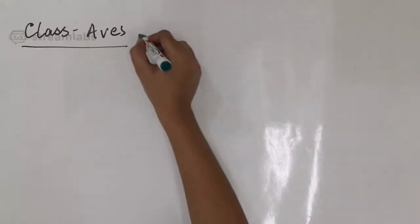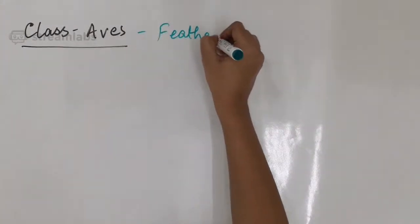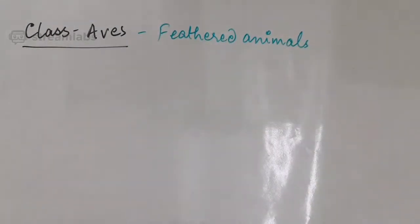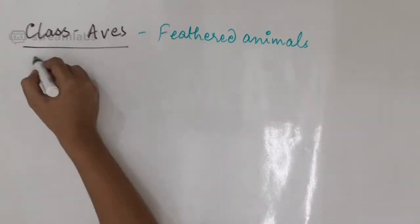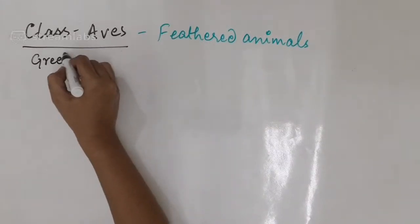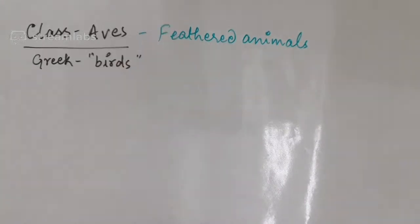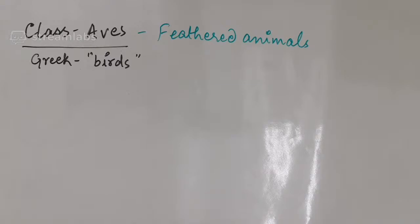This class of the vertebrates is called the feathered animals, and the word Aves is a Greek word which means birds. Birds have evolved from reptiles and have many similar features. Reptiles, that is the class Reptilia which we studied in the previous lecture, can be easily distinguished from Aves because birds have their bodies covered with feathers.